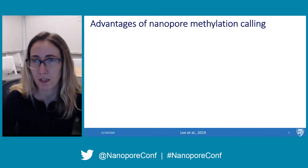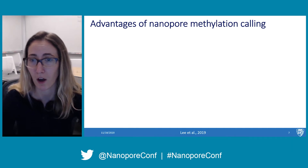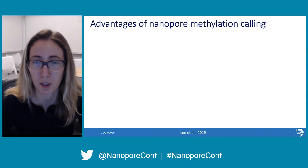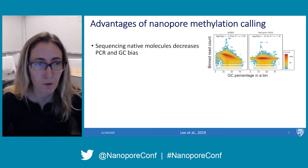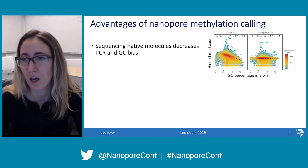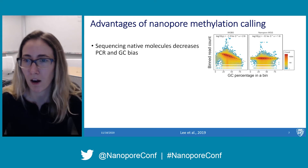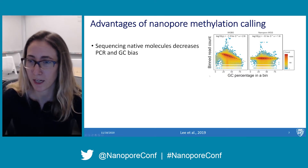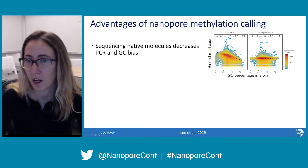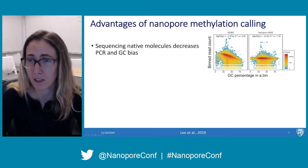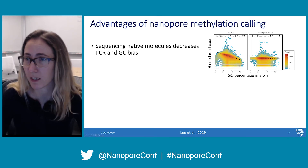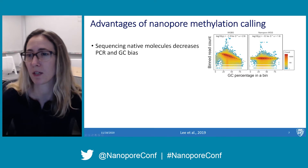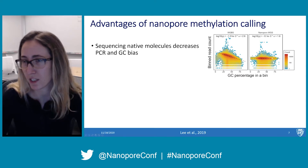There are many advantages of using nanopore sequencing for methylation calling over the canonical method, bisulfite sequencing. First, nanopore sequencing sequences native molecules without any PCR, which decreases PCR and GC biases. With whole genome bisulfite data, higher GC content results in fewer reads due to this bias, whereas for nanopore sequencing, because we're not relying on PCR, we don't have this GC bias.